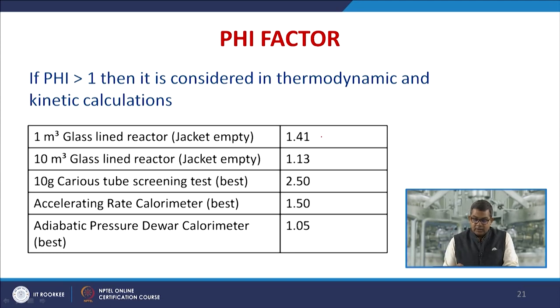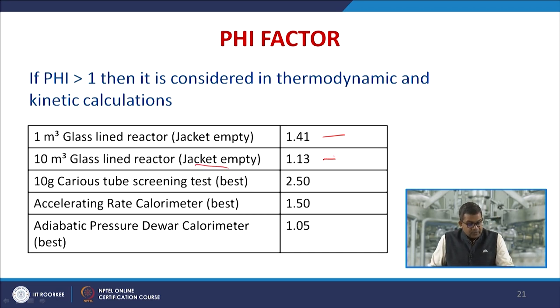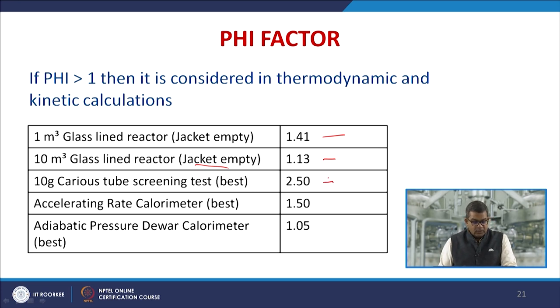If phi is greater than 1, it must be considered in thermodynamic and kinetic calculations. For a 1 m³ glass-lined reactor with empty jacket, φ = 1.41; for a 10 m³ glass-lined reactor with empty jacket, φ = 1.13; for a 10-gram carrier tube screening test, φ = 2.50; for an accelerating rate calorimeter, φ = 1.50; and for an adiabatic pressure dewar calorimeter, φ = 1.05.